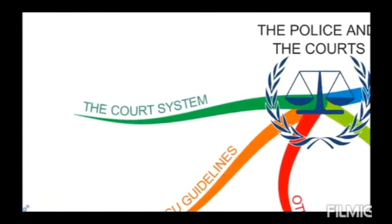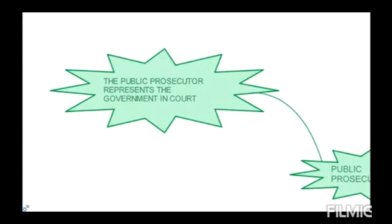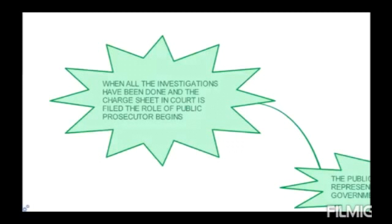Now we have the court system also. Jo police ka court system hai, uske andar baat karte hain. The police helps everyone — if anybody does a violation or exploits our fundamental rights, hum case file kar sakte hain. The public prosecutor is appointed and paid by the state government. His main function is to secure the prosecution of offenses, to keep the society free from crime. Only those persons are eligible to become a police inspector who have successfully completed seven years in the bar association and have also cleared an examination conducted by the state government. The public prosecutor's role begins when all the investigations have been done and the charge sheet in court is filed.